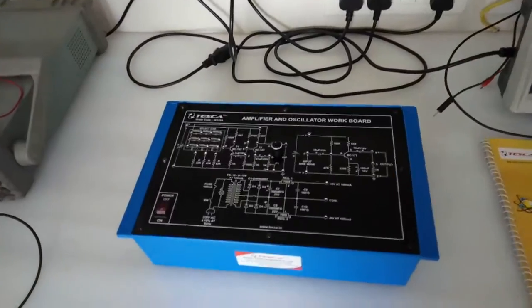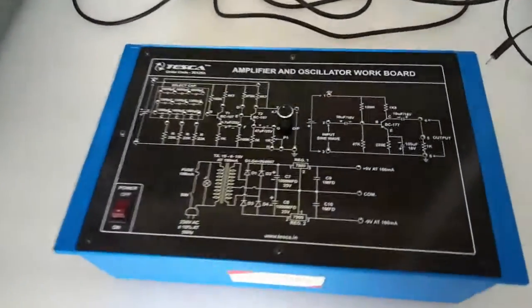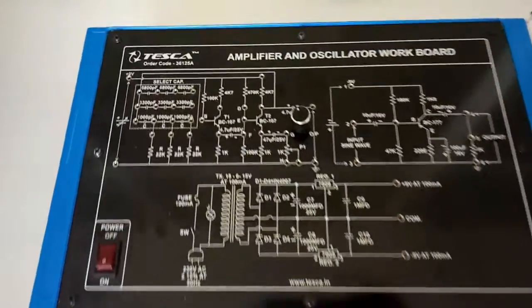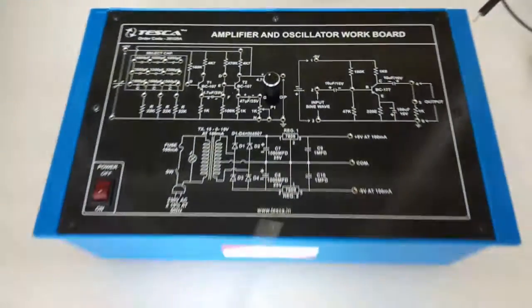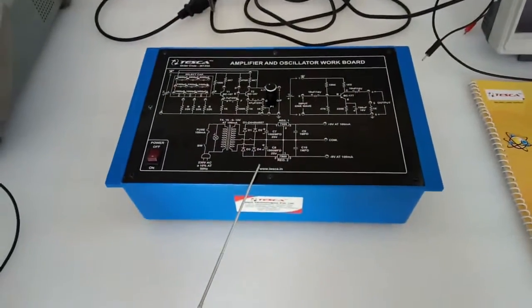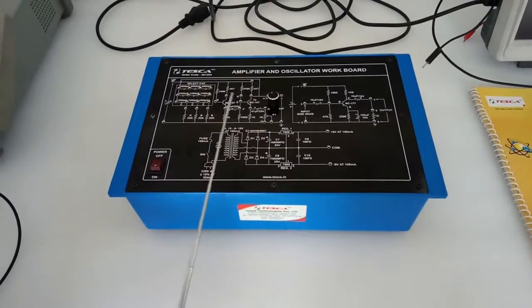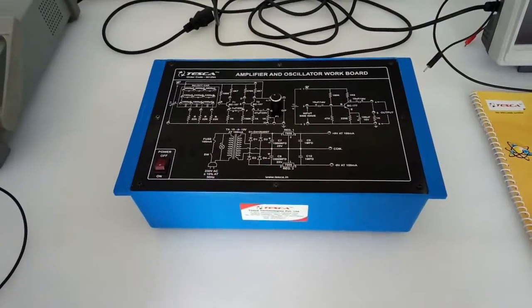Today we are going to show you our amplifier and oscillator workboard trainer kit, order code 36125A. This is the amplifier and oscillator trainer kit. With the help of this, we will see the phase shift amplifier oscillator and CE amplifier.